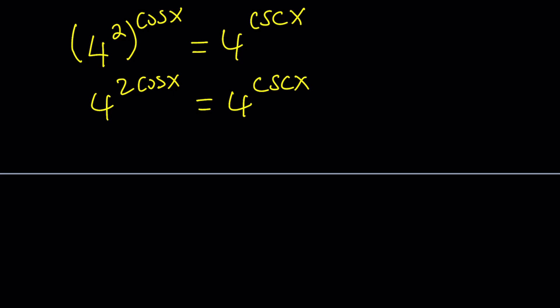Now we can multiply the exponents. 4 to the power 2 cosine x equals 4 to the power cosecant x. Now we can get rid of the bases completely. Since the bases are equal, so are the exponents. This means 2 cosine x equals cosecant x. What is cosecant? We don't see that very often. Secant is the reciprocal of cosine and cosecant is the reciprocal of sine. The reciprocal of sine cannot be secant because they both start with s. So the reciprocals are going to be different letters or different initials.